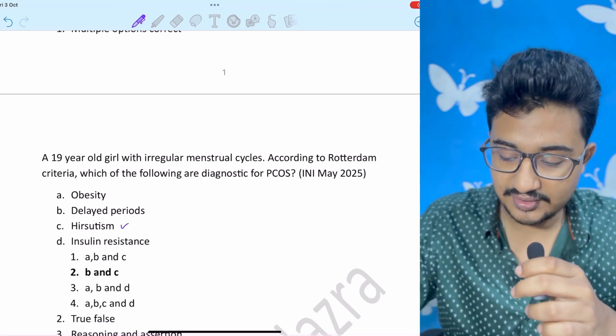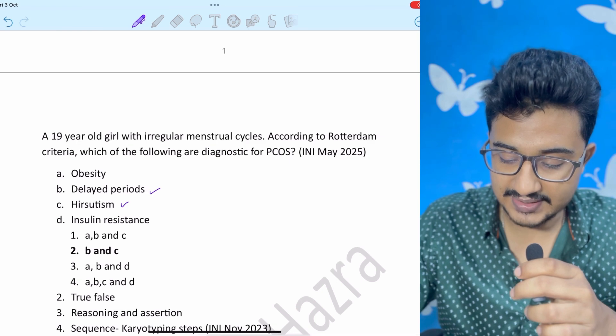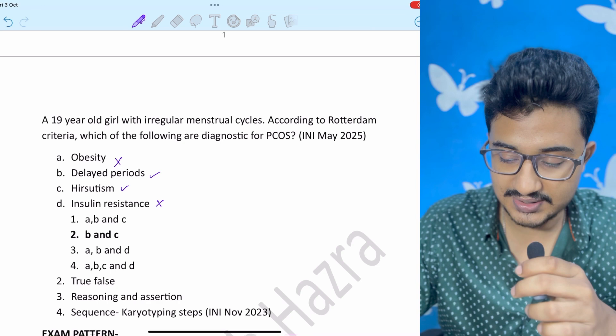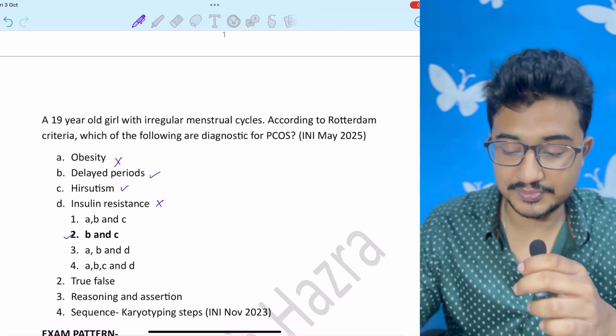You can see signs of hyperandrogenism, hirsutism and delayed periods. These two are coming in the criteria. Obesity is not in the criteria. Insulin resistance is not in the criteria. So B and C is the correct option.